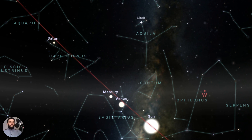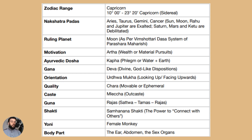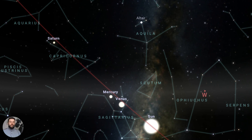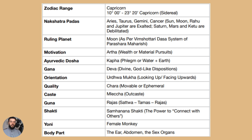Welcome to School of Vedic Astrology. In today's video I'd like to give a presentation on Shravana Nakshatra. Last time I did Dhanishta Nakshatra and these two actually form a pair together, as we will soon see. In the night sky, Shravana is considered to be in Capricorn, from 10 degrees to 23 degrees of Capricorn. The motivation is Artha, because the tenth house — the original Capricorn house — is the strongest Artha house.